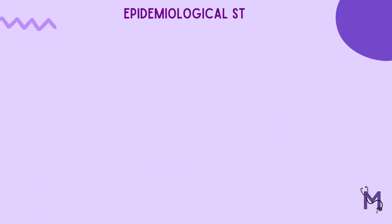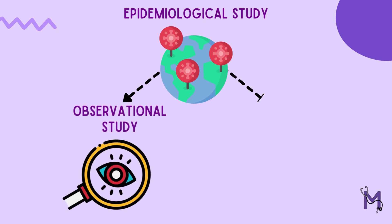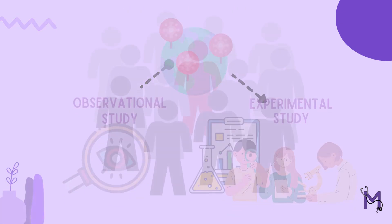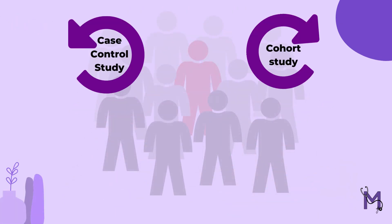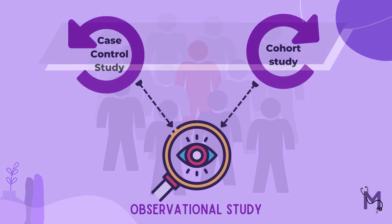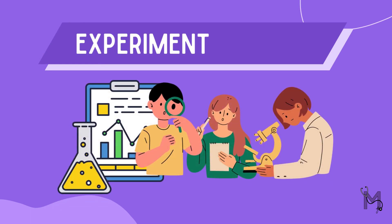Epidemiological studies can be studied under observational and experimental studies. Both case control and cohort studies are types of observational studies, which we have already learnt about previously. In today's video, we are going to briefly understand the experimental study.